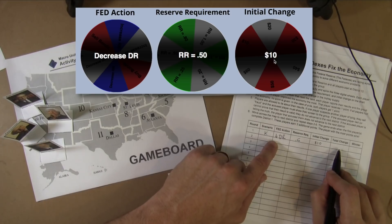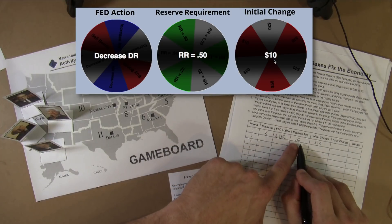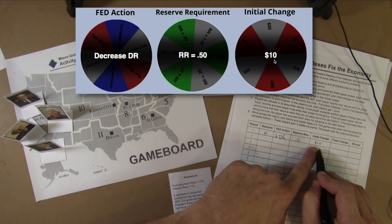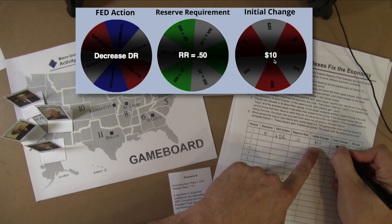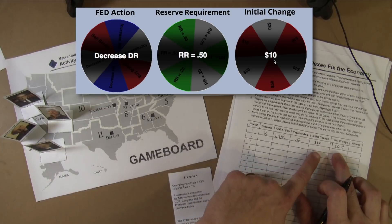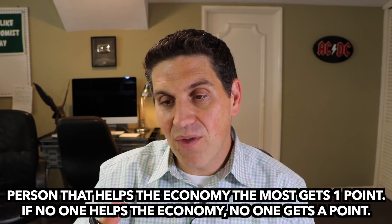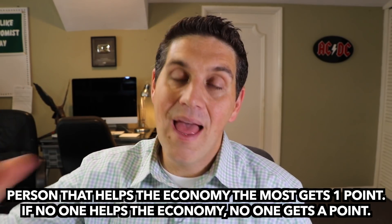The next step is the total change in the money supply. A decrease in the discount rate would increase the money supply. A reserve requirement of 0.5 means the multiplier is 2, and then a $10 change in the money supply would end up being a $20 total change in the money supply — and this would be an increase in the total money supply. That's important because it tells you if you helped the economy or not.